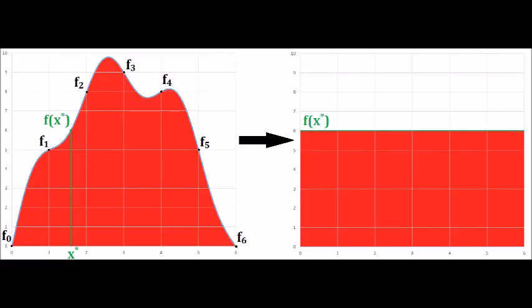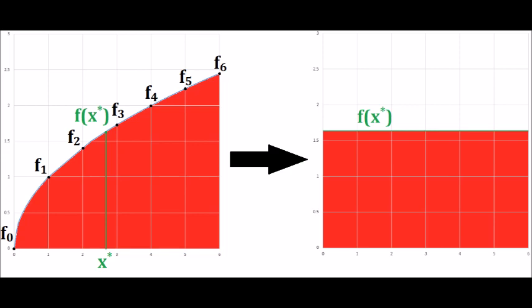To understand what's inside that purple box, we must consider the mean value theorem. Given an arbitrary function, we represent the area underneath the curve in red. There is a rectangle with the same area. The height of that rectangle is a function of some value x star. We don't have to know the exact value of x star — it's just important to know that x star is somewhere between x0 and x6. The area of a rectangle is much easier to find, so instead of adding up all the f's, which in our case are unknown, we simply multiply one value, f of x star, by the number of panels.